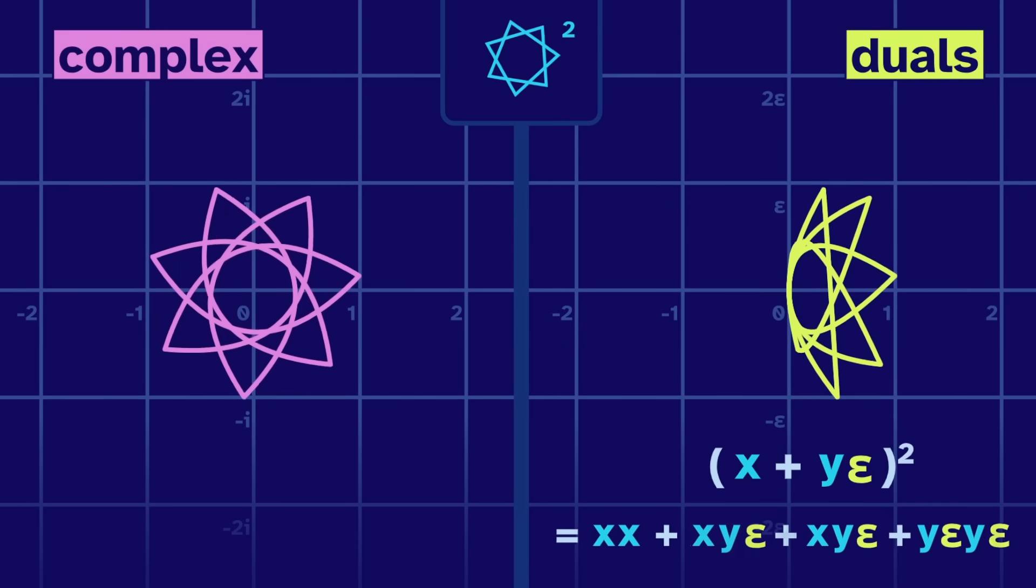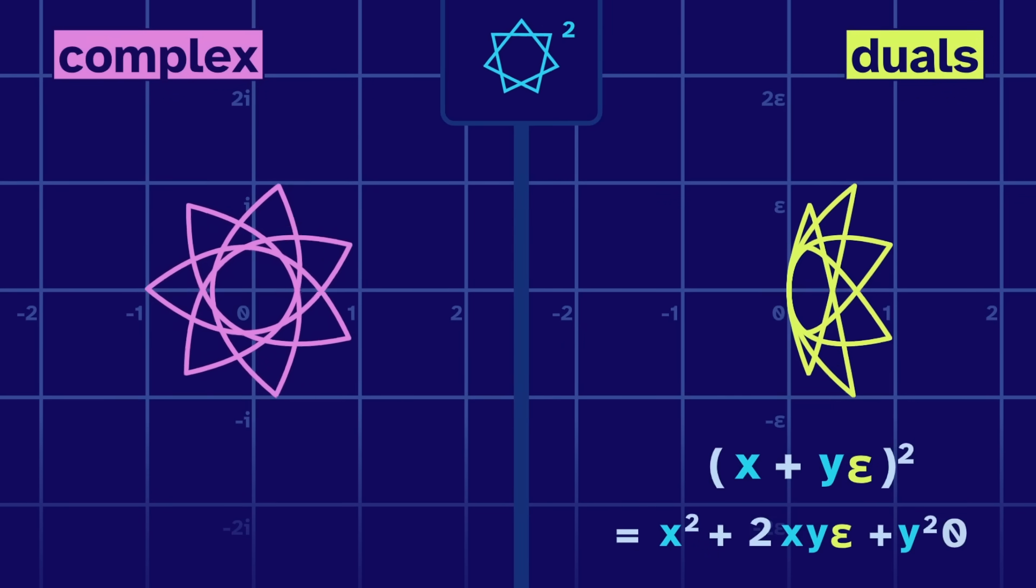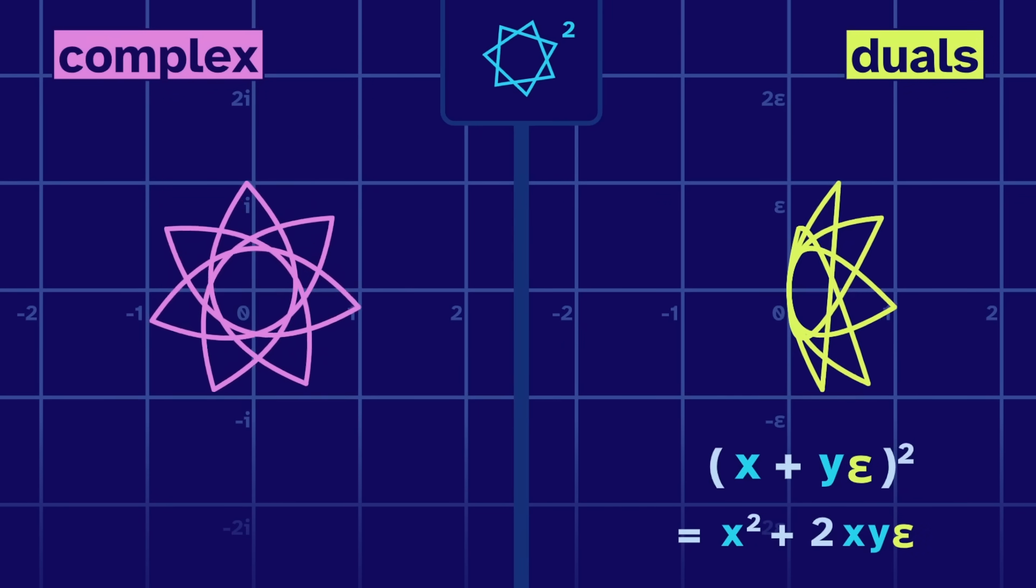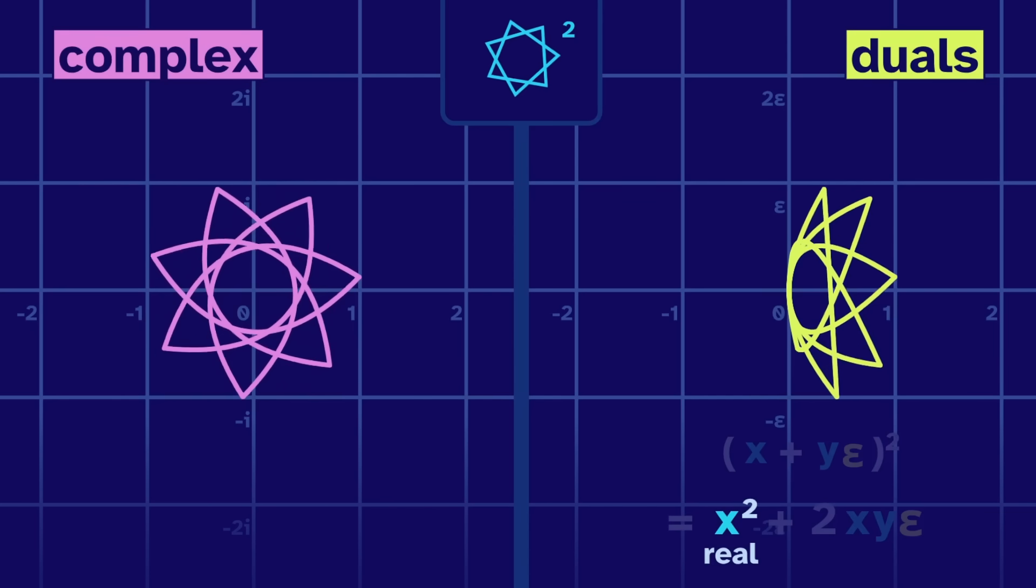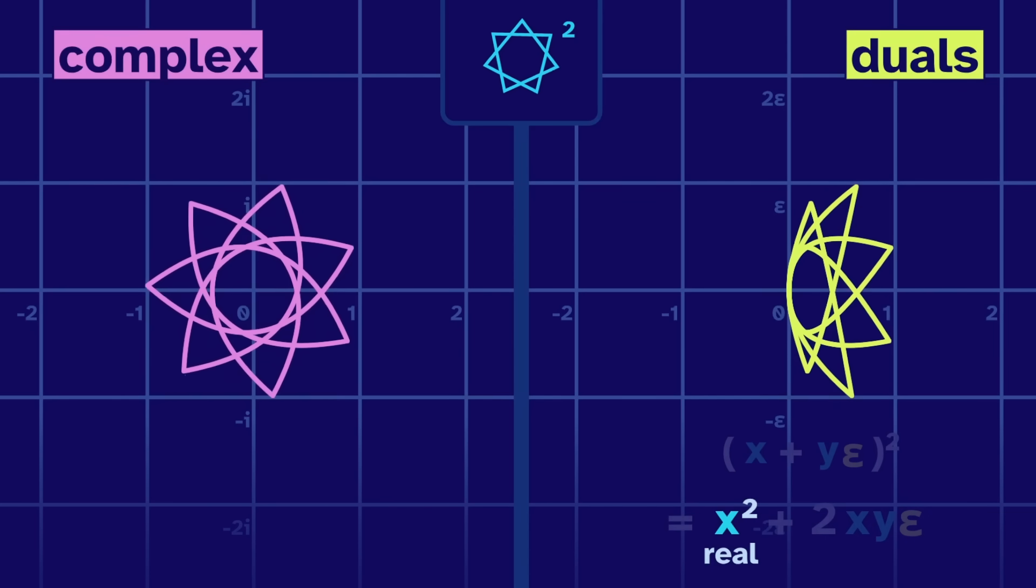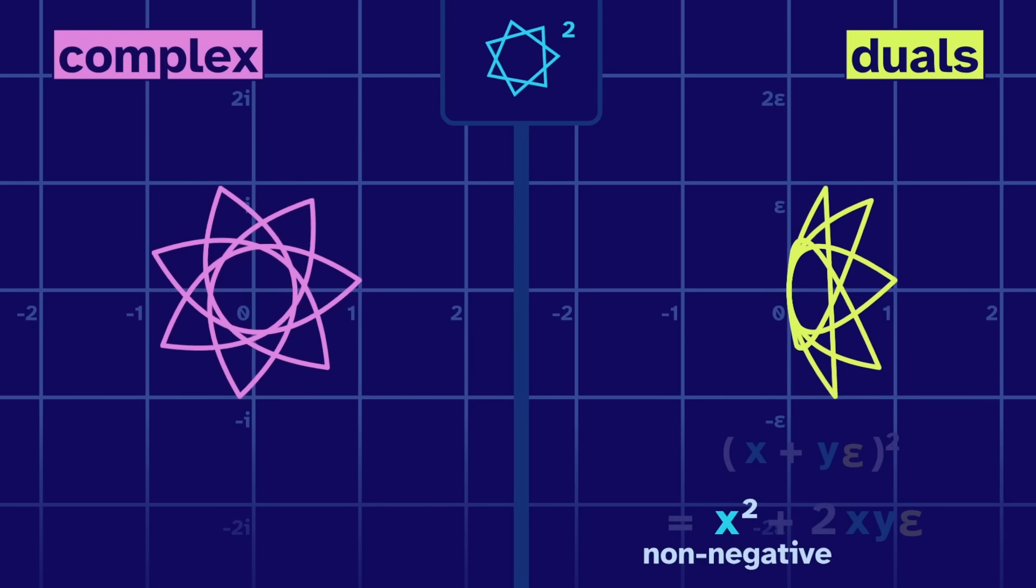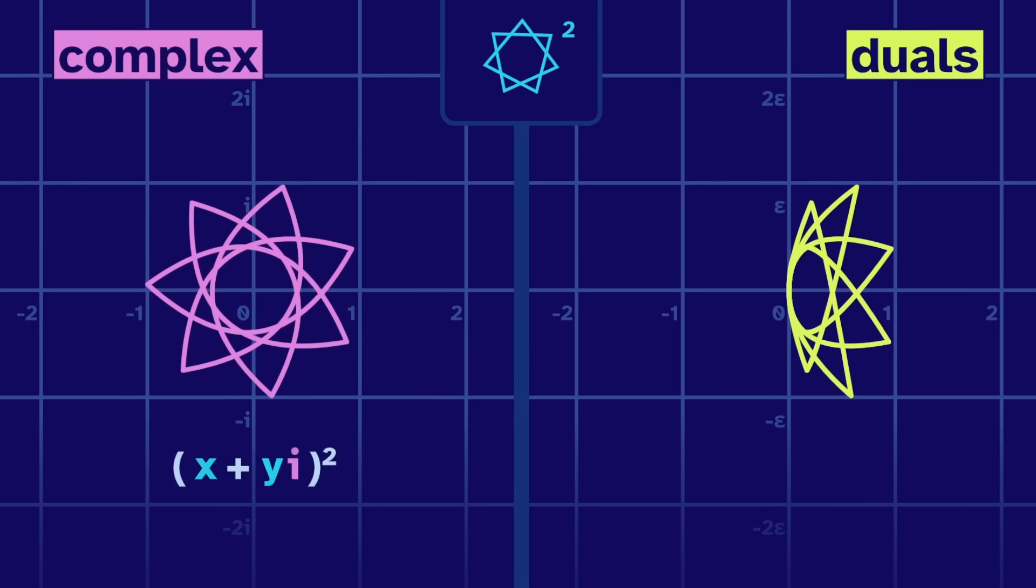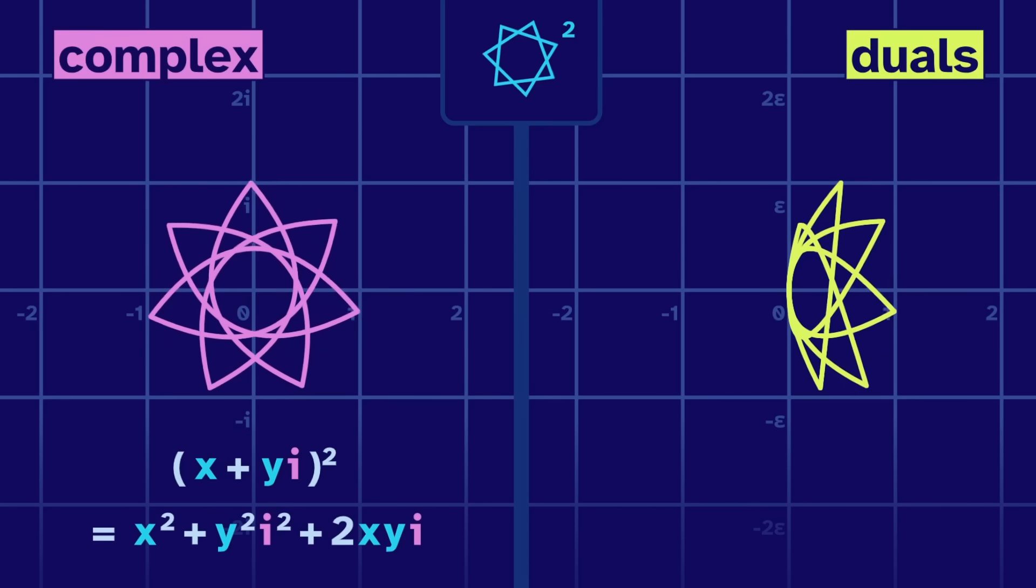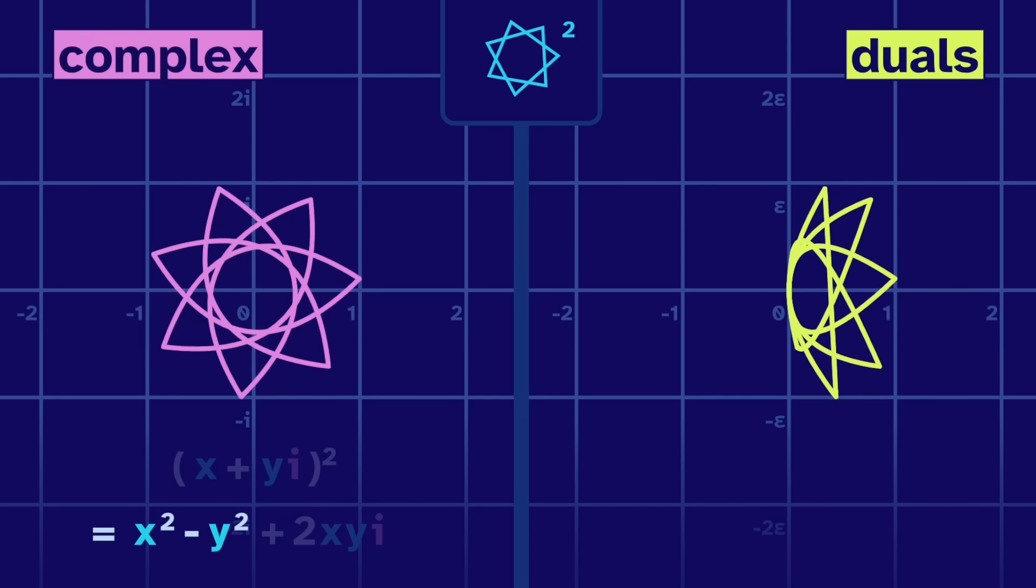If we square any dual number, then epsilon squared is zero, so it disappears. And the real part of the result is just x squared. Since x is real, x squared is non-negative. It can't be in the west. The complex squares are only able to get to the west because i squares to negative one. That's why they're more useful.